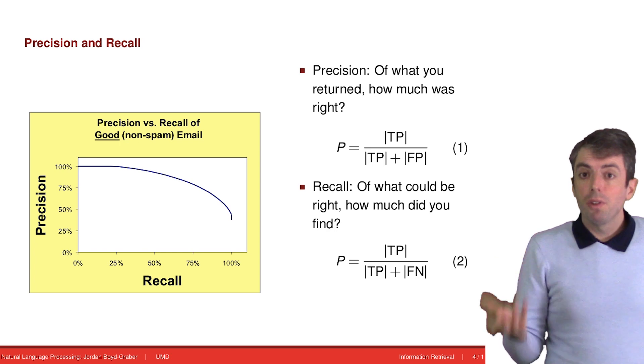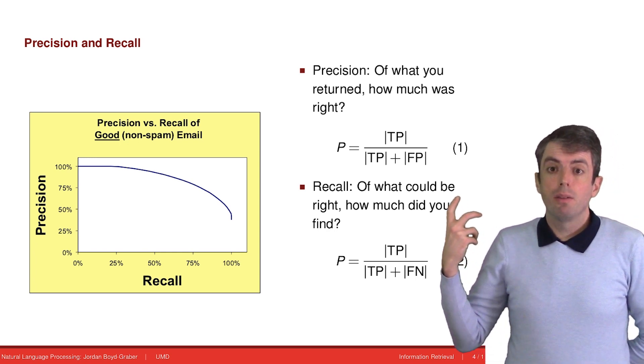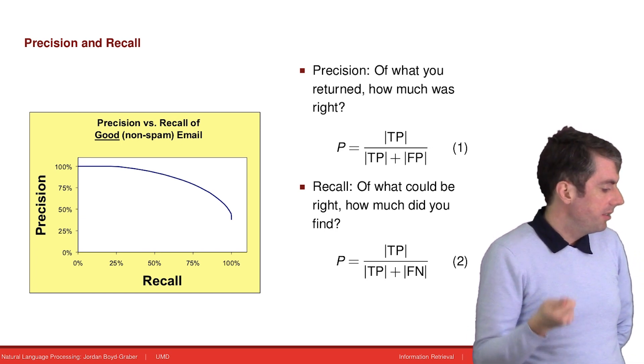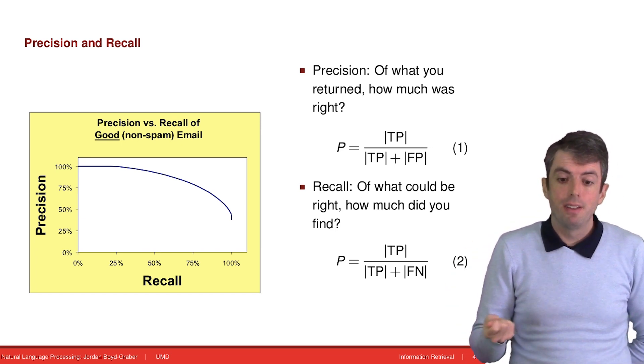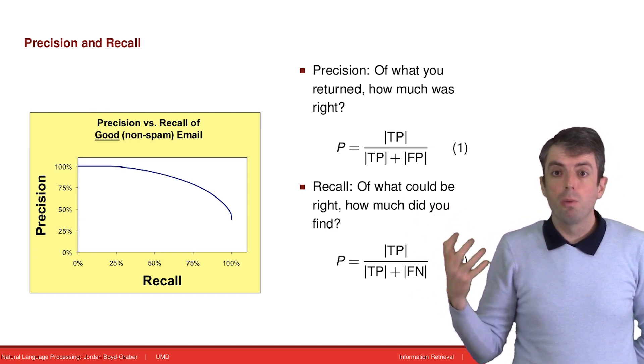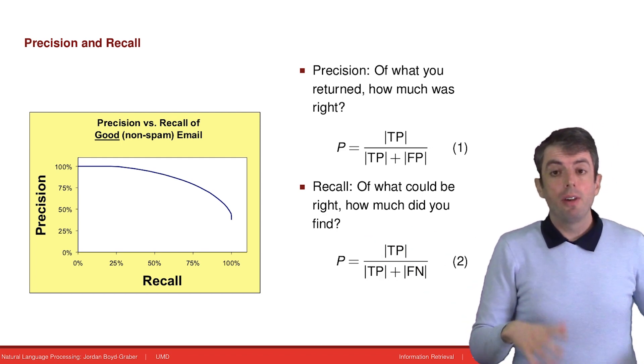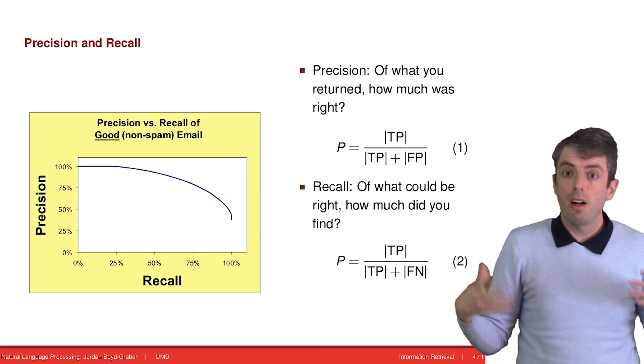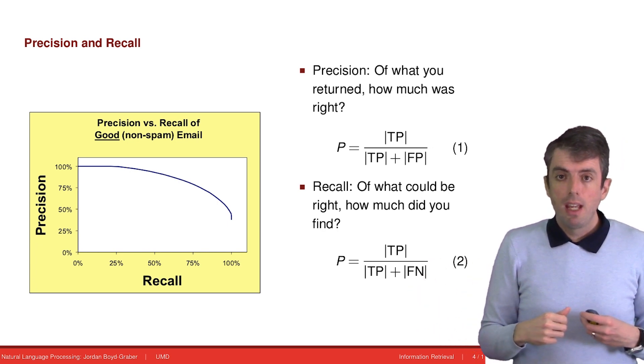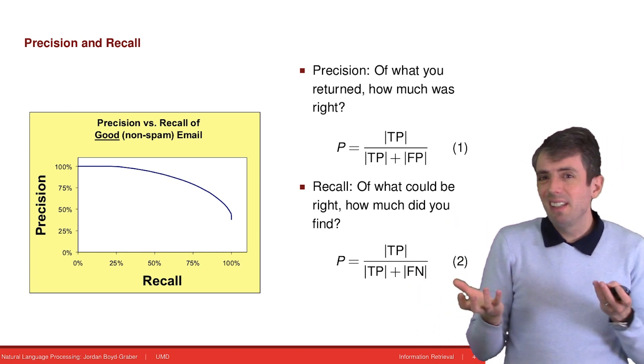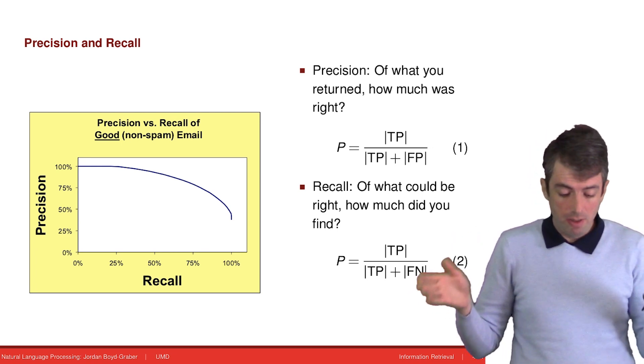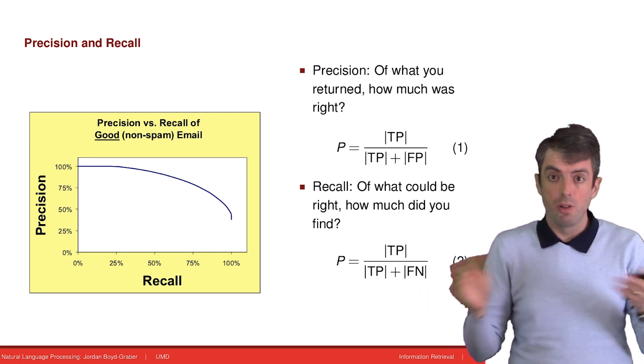What we'll talk about is precision and recall. Precision is how much of the things that you returned were actually relevant. You have a set of search results. What proportion of the things that you returned are actually relevant? This is one of the primary ways that you would like to judge a system. Do the search results look good or not?